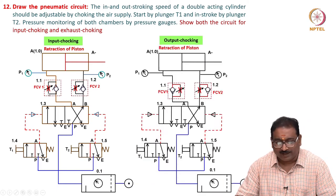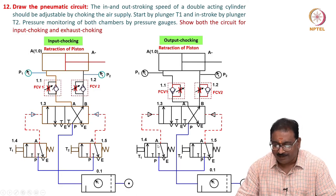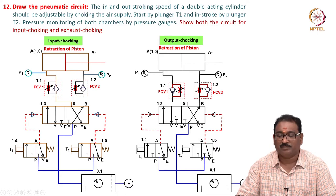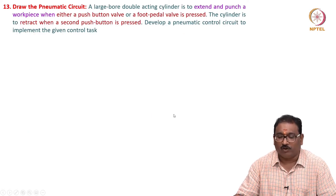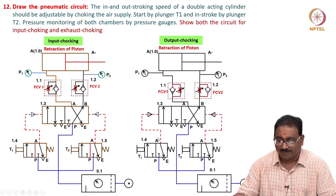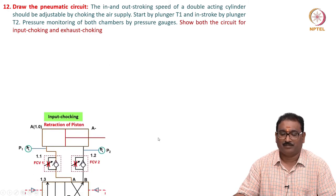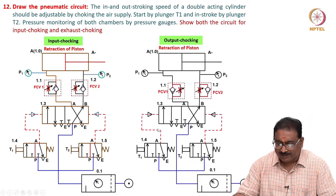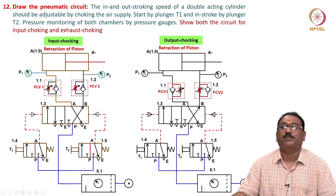For output choking, you just reverse the valves - nothing else changes, only I am reversing the valve direction. If you press T1, the flow comes here and actuates this position. The output flow is through the metered orifice - very simple. Only the directions of FCV1 and FCV2 matter.